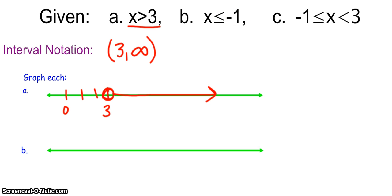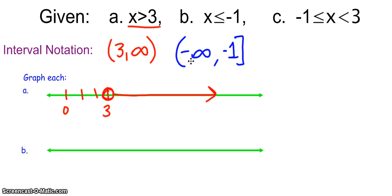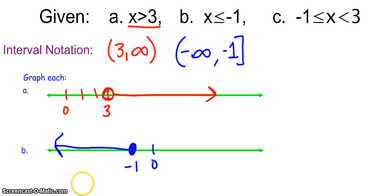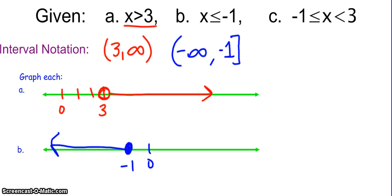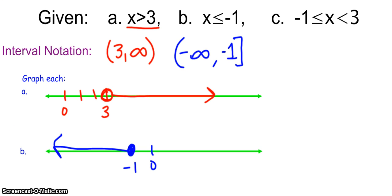In the next one, x is less than or equal to negative 1. That means negative 1 is going to be on the right-hand side of our interval, because that's our biggest number, and we are allowed to touch negative 1. Then I want everything smaller than negative 1. On the number line, I include negative 1 and everything smaller, which is a ray going all the way to negative infinity. You can use a parenthesis or bracket on the number line itself.